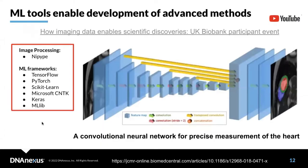For those interested in pragmatic machine learning examples, we refer to a recent YouTube recording shared by UK Biobank called 'How Imaging Data Enables Scientific Discoveries,' where you can find advanced method examples. One such example is using a convolutional neural network for precise measurement of the heart. You would also be able to implement machine learning for raw imaging data.